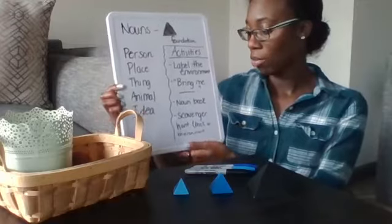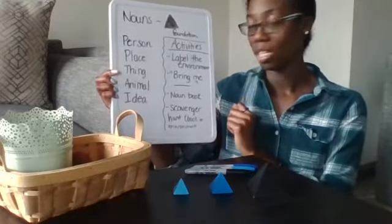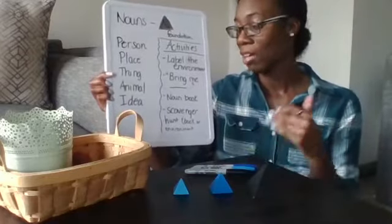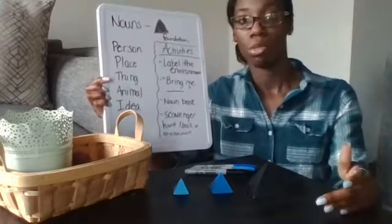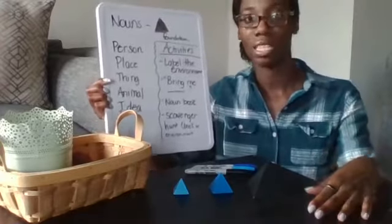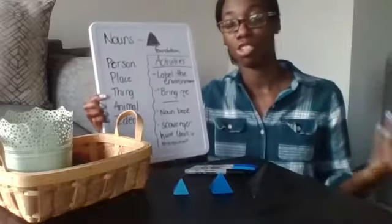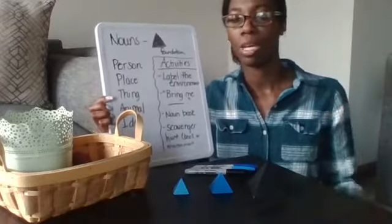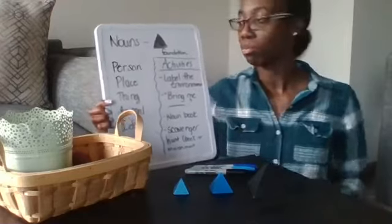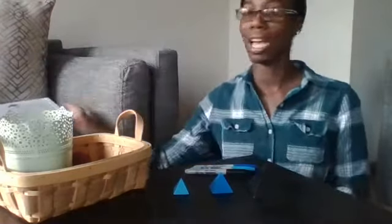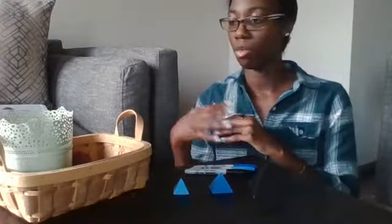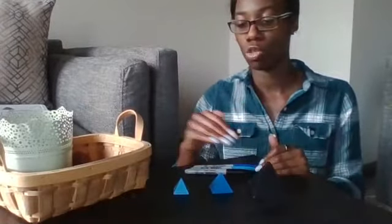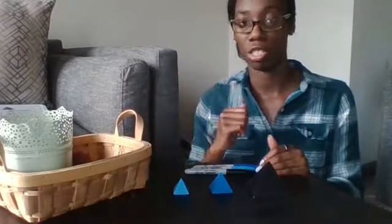Another activity would be a scavenger hunt, so they could read a book and maybe you can say find or name all of the people in the book, name all of the animals in the book, name the things in the book. Those are different types of activities that you can do with students who may need a little bit more help and support with nouns. After they do the nouns, similar to the labeling the environment or 'bring me a' activity, you can have them start to work on the article and adjective.